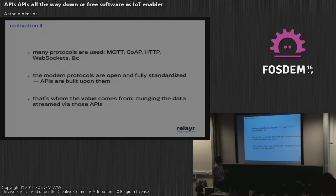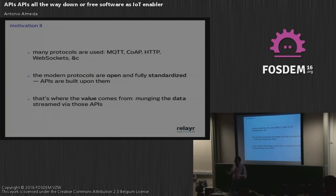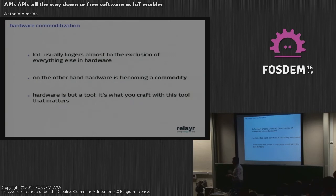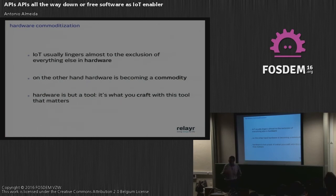I think the value comes from data. With the washing machine example, both the owner and the manufacturer want to know what's happening — the manufacturer wants to know when machines start having problems so they can try to sell a new one. I also think IoT has focused mostly on hardware and excludes everything else. The hardware is interesting and now it's easy to get — it's becoming a commodity. But what's really interesting is what you can do when you use that hardware with free software, building APIs end to end from devices to the data you process.